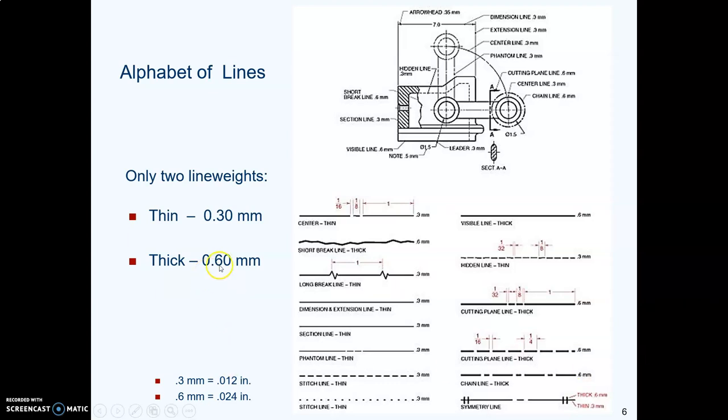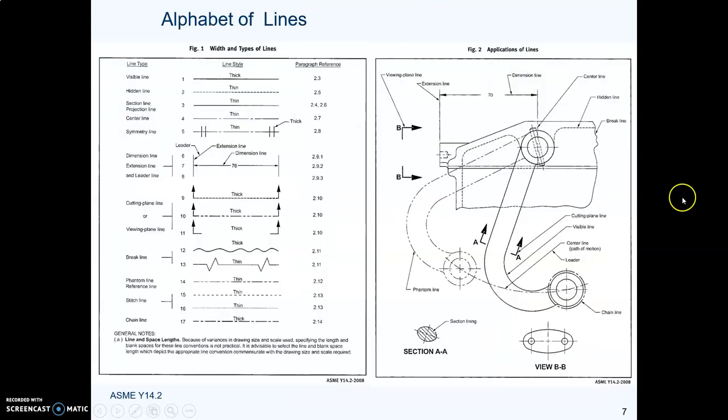Object lines and cutting plane lines are thick. Everything else is thin. Thick lines are 0.6 of a millimeter. Thin lines are 0.3 of a millimeter. Here is the ASME standard about lines, where they label which ones are thick and which ones are thin. You can see that almost all of them are thin, and here on the right they have given you an illustration of some examples.